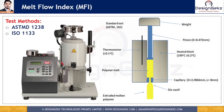The sample is generally heated above its melting or softening temperature. The standard temperature is 190 degrees Celsius. After preheating, a specified weight is placed onto the piston. Standard weights used include 2.16 kg and 5 kg, but different weights can be used depending on the material — such as 0.325 kg, 1.2 kg, 2.16 kg, 3.8 kg, 5 kg, 10 kg, 12.5 kg, and 21.6 kg.